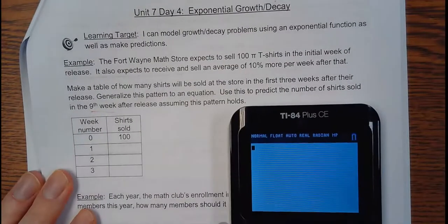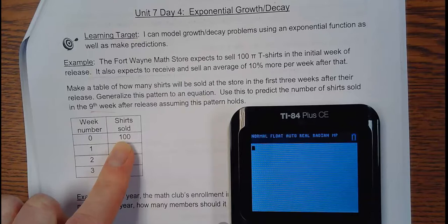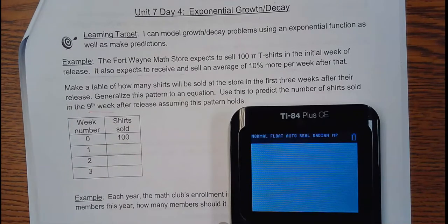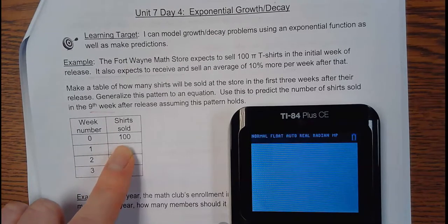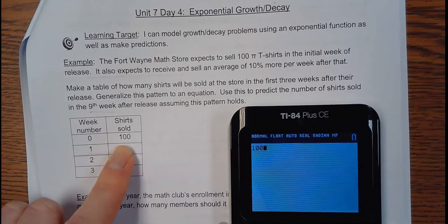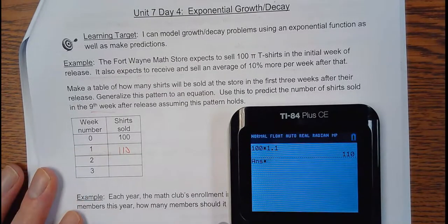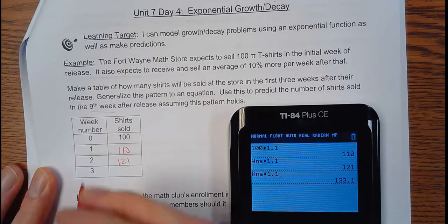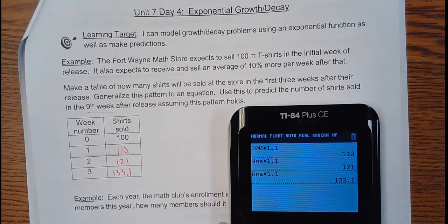Use this to predict the number of shirts sold in the ninth week. First off, if it's going to be 10% more every week, we sold 100 in the first one. If I want to add 10% to that, I'm not going to figure out what 10% is and add it back to 100. The fast way of doing that would be multiply by 1.1, because it's a 10% increase. If you remember, a 10% increase, 1 means to keep what you got. The 0.1 means a 10% increase.